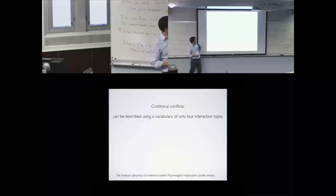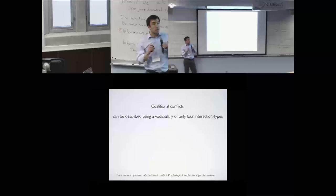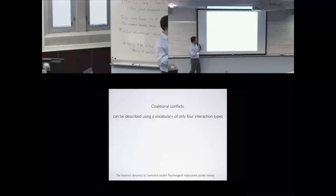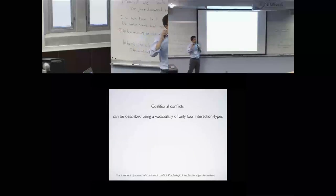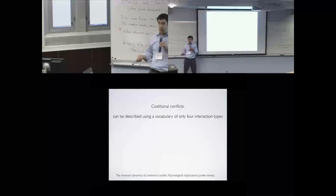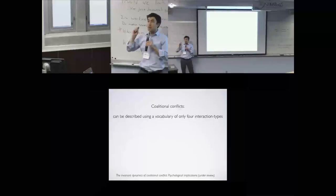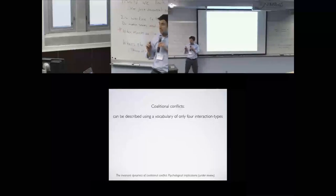In particular, what I want to talk about is a small set of invariant dynamics, actually only four interaction types. The argument is that all coalitional or interpersonal conflicts involving three or more agents can be described using a vocabulary of these interaction types.